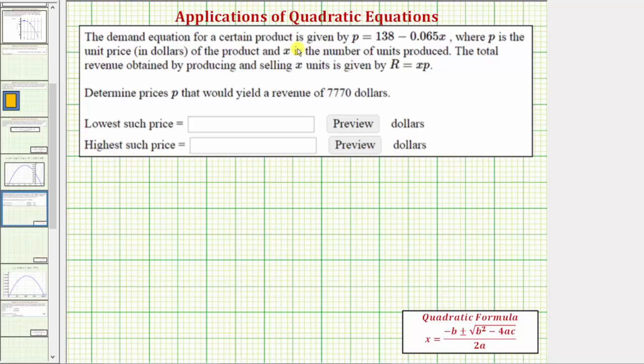The demand equation for a certain product is given by p equals 138 minus 0.065x, where p is the price in dollars of the product and x is the number of units produced. The total revenue obtained by producing and selling x units is given by R equals x times p.